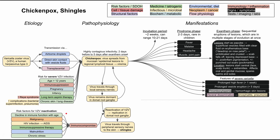Risk factors for varicella zoster reactivation — that is, risk factors for shingles — include advancing age, as immune function declines in the 50s and 60s. Malignancies and anti-cancer medications cause immunocompromise. HIV infection progressing to AIDS can reactivate varicella zoster. Immunosuppressive therapy for malignancies or organ transplants, malnutrition, and chronic stress can all lead to immunocompromise and trigger shingles.